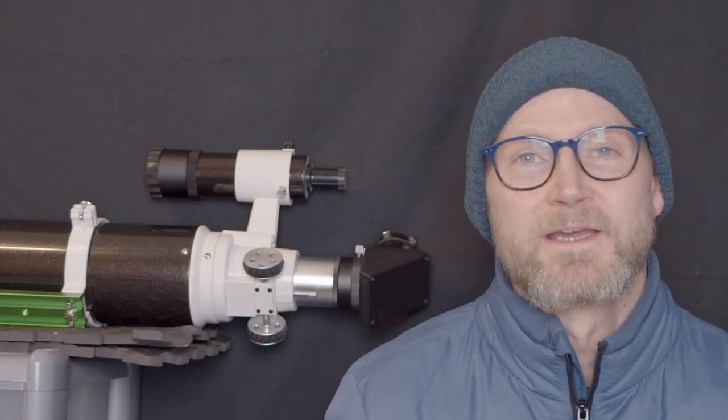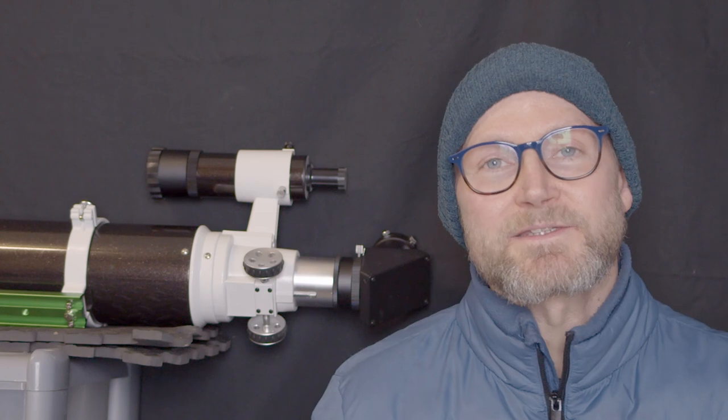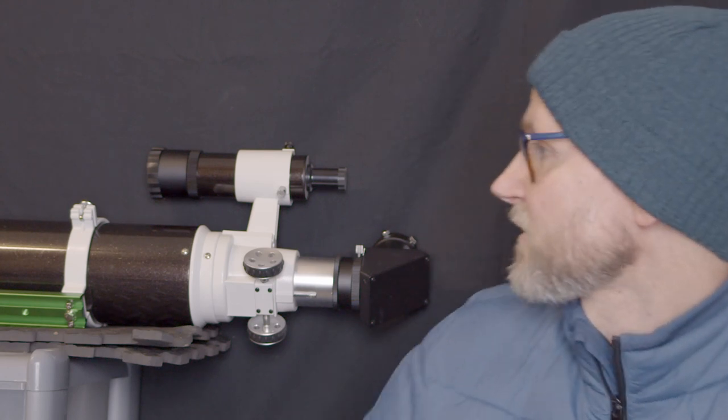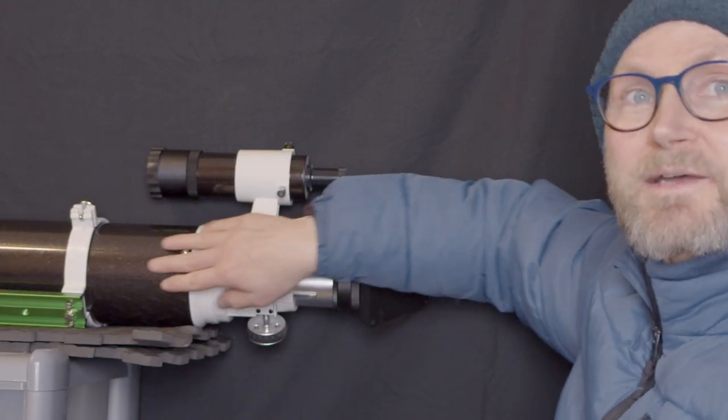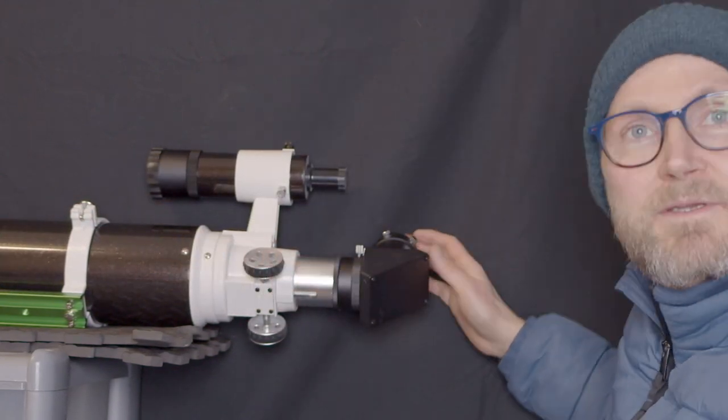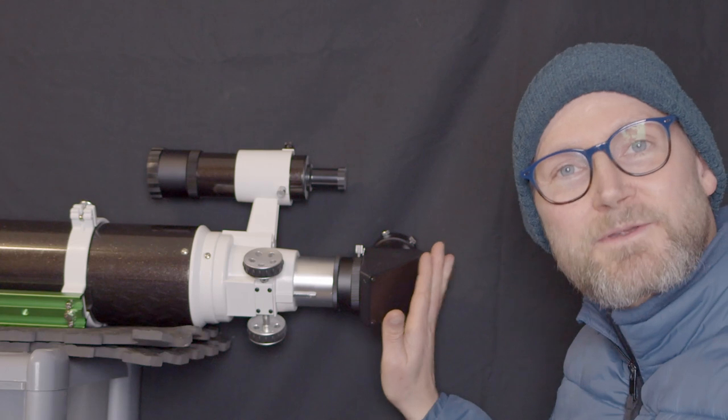But they do have an Achilles heel called chromatic aberration. Basically what happens is the light enters the telescope and travels through two lenses at the front, comes all the way down the bottom and gets focused at the eyepiece or a camera at the back.